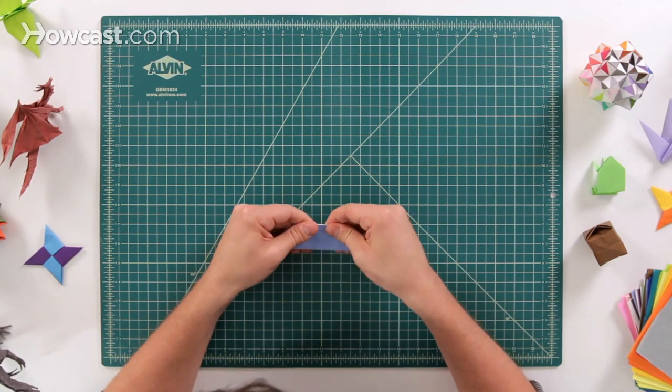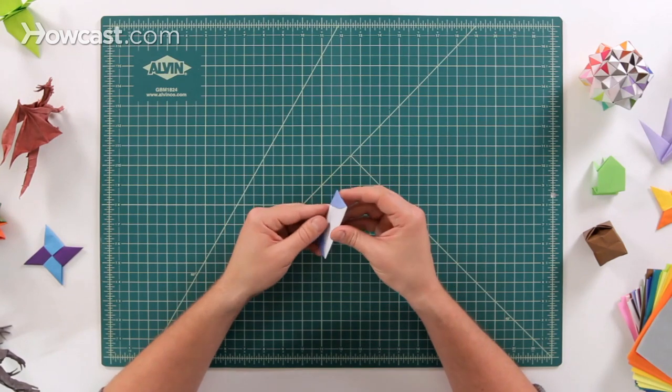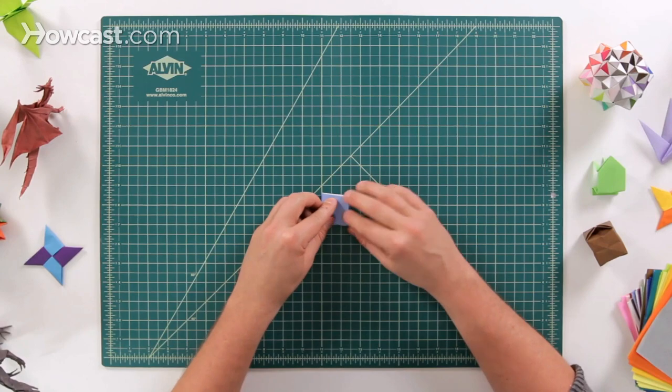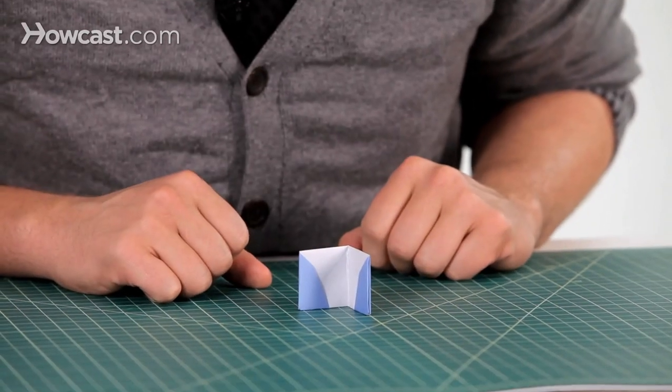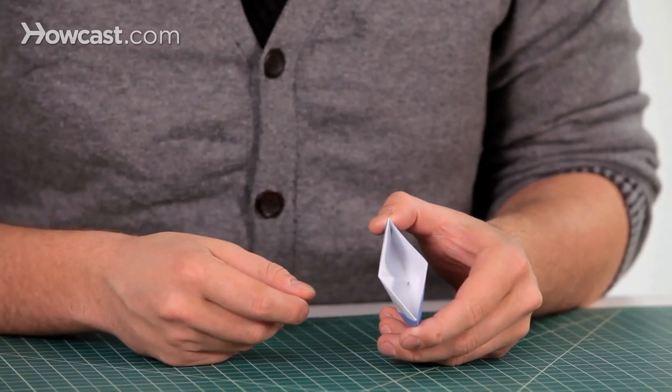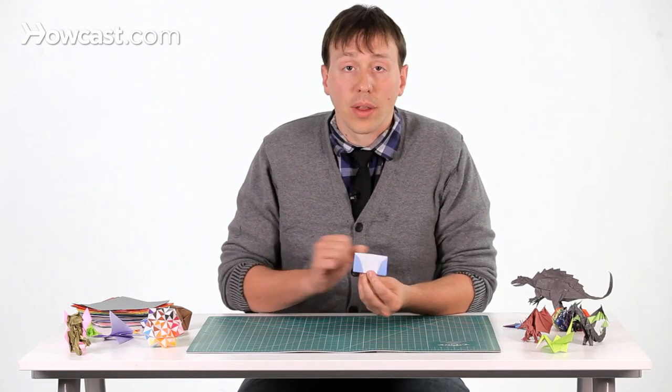And once that happens, you can see, you've created an entire billfold. You can fold it in half and it makes a nice little wallet, just like that, it opens up and that's where you would put the bills. And that is an origami wallet.